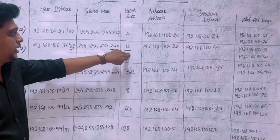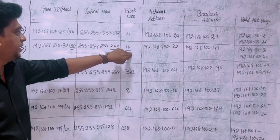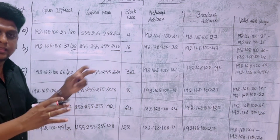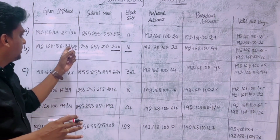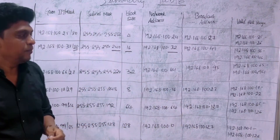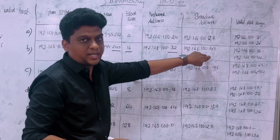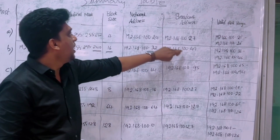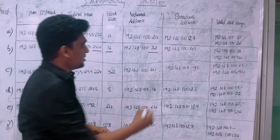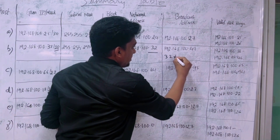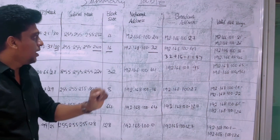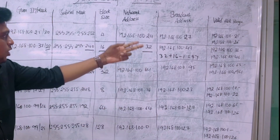The network address is the nearest multiple of 16 that is below 37. The multiples of 16 are 16, 32, 48 — but 48 exceeds 37, so we choose 32 as the network address. The broadcast address is network address plus block size minus 1, which is 32 plus 16 minus 1, giving 47.